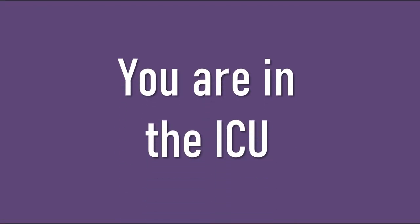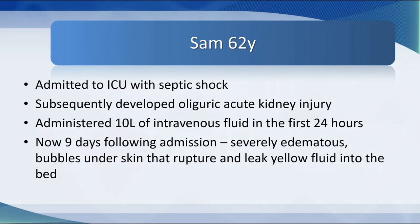Let's start with a scenario. You are in the ICU, and there you encounter Sam, who is 62 years old and was admitted with septic shock. He subsequently developed an oliguric acute kidney injury, and over the first 24 hours in the ICU, he had been administered 10 litres of intravenous fluid. Nine days following admission, he is severely edematous. He has bubbles under his skin that rupture and leak yellow fluid into the bed. What's going on here?